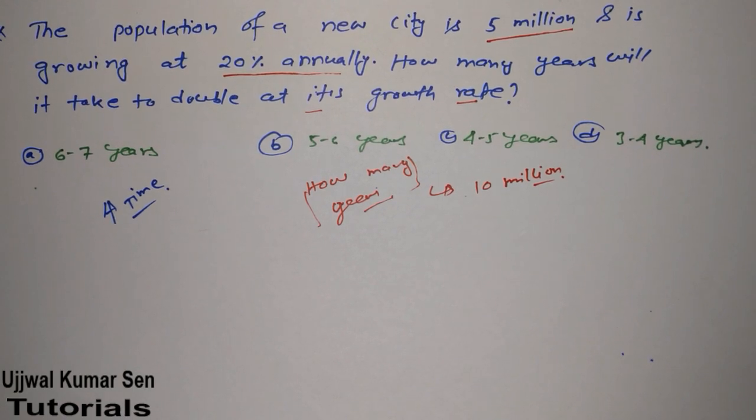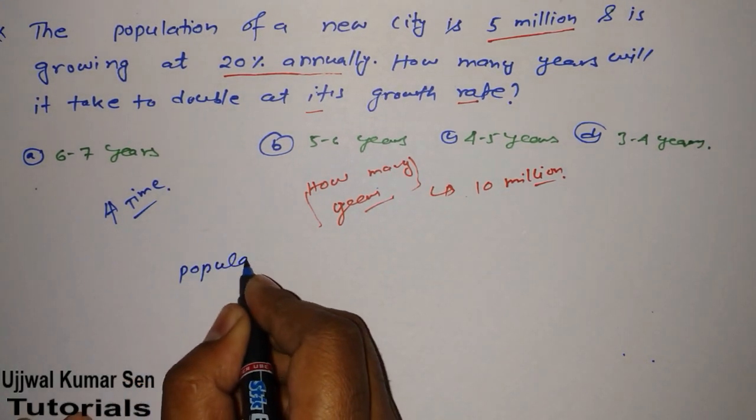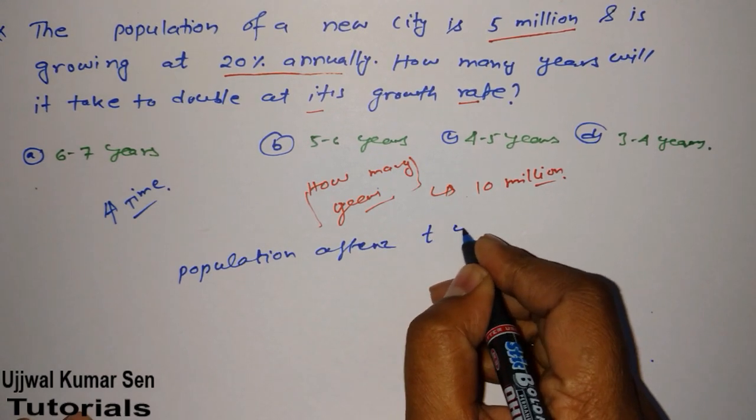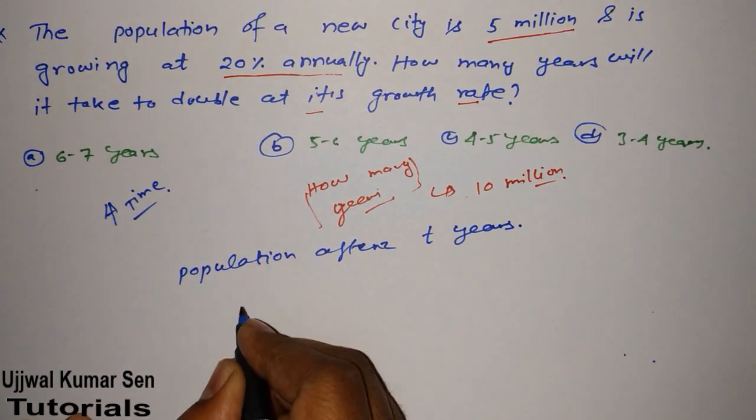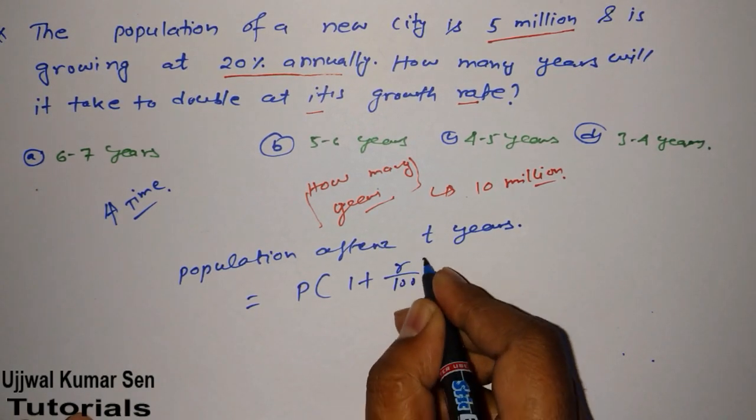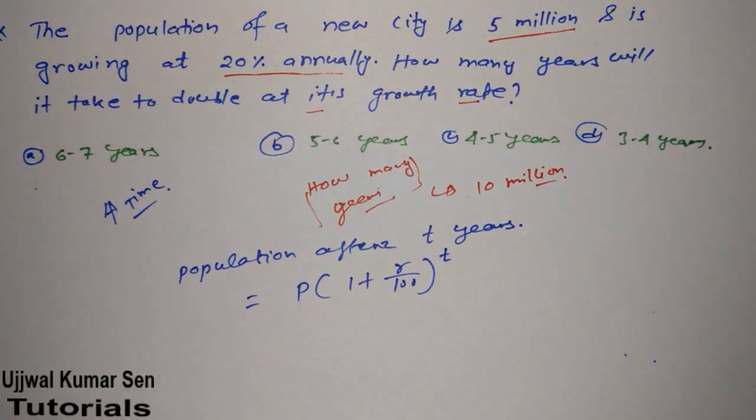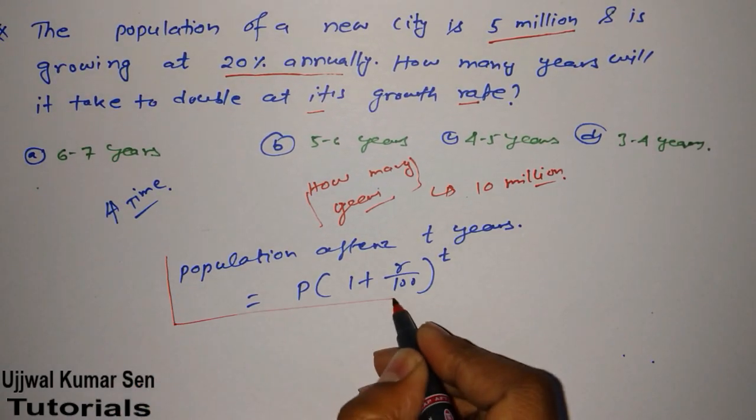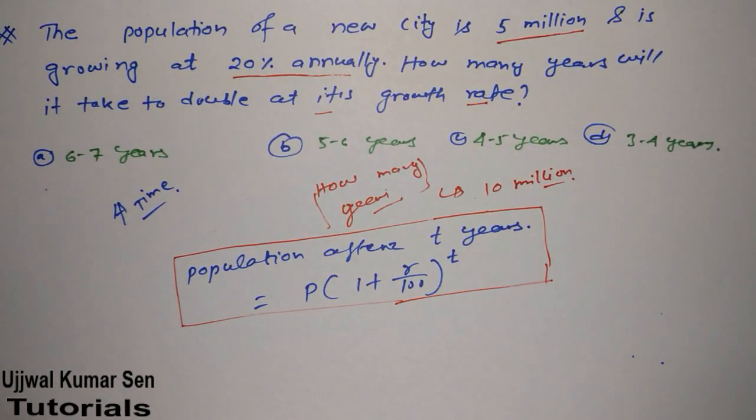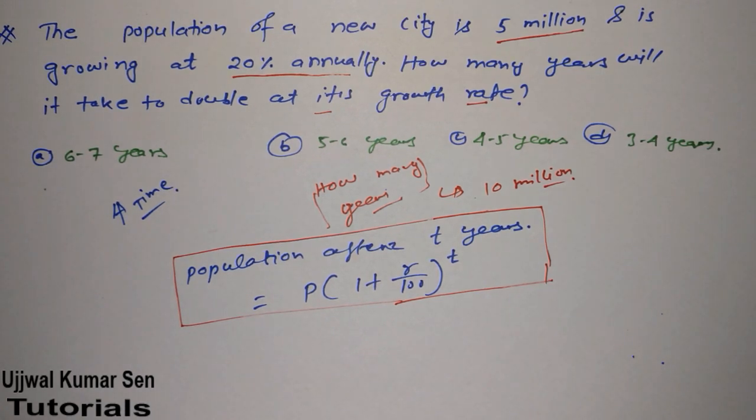The formula is: Population after t years is equal to P(1 + r/100)^t. Now let's look at the formula first and think about whether we can use this formula in this problem or not.